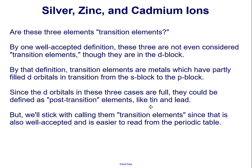Are silver, zinc, and cadmium even transition elements? By one well-accepted definition, these three are not even considered transition elements, though they are in the d block. By that definition, transition elements are metals which have partly filled d orbitals in transitioning from the s block to the p block. Since the d orbitals in these three cases are full, they could be defined as post-transition elements like tin or lead. But we'll stick with calling them transition elements, since that is also well-accepted and is easier to read from the periodic table.